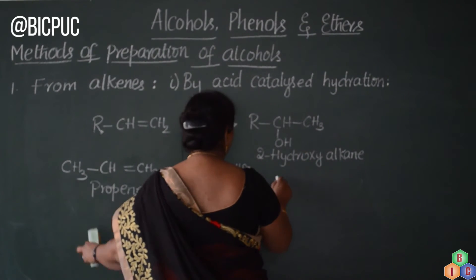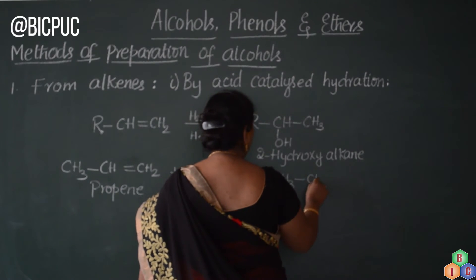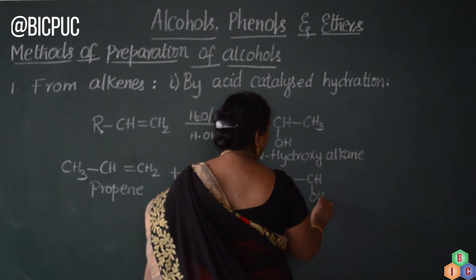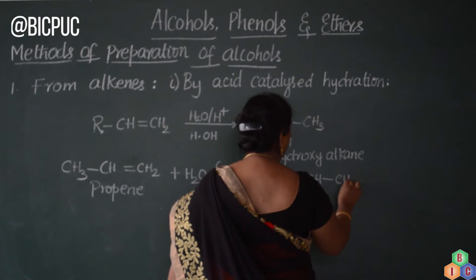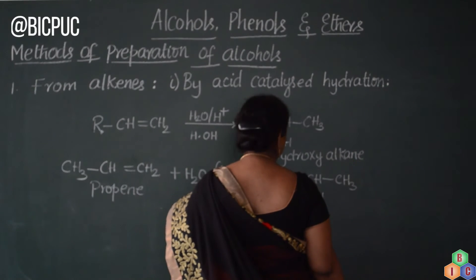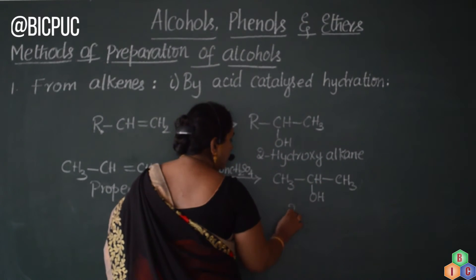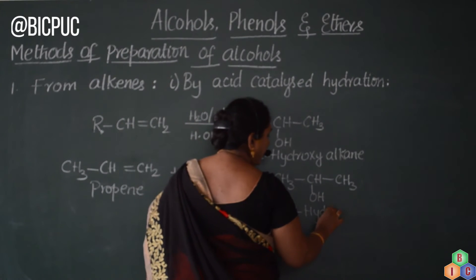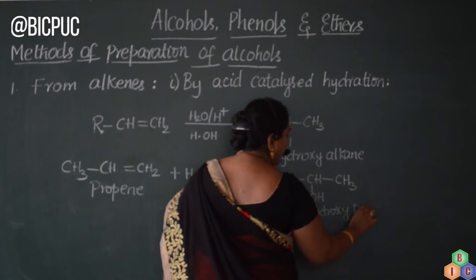The product will be CH3-CH(OH)-CH3. OH from water takes attachment to the middle carbon and H from water gets attached to the CH2, so the double bond is converted into a single bond. The name of this compound is 2-hydroxypropane.